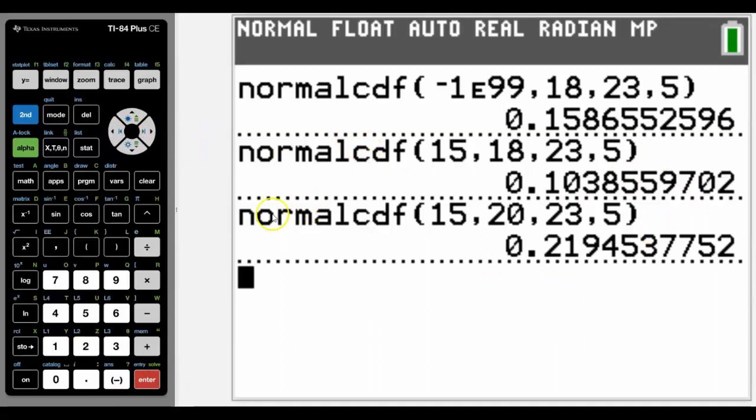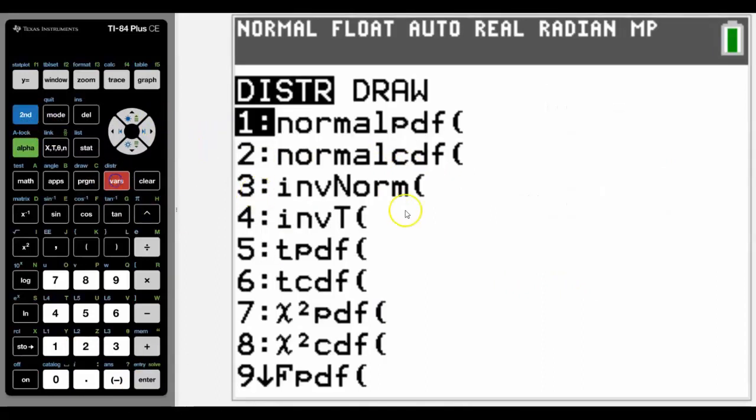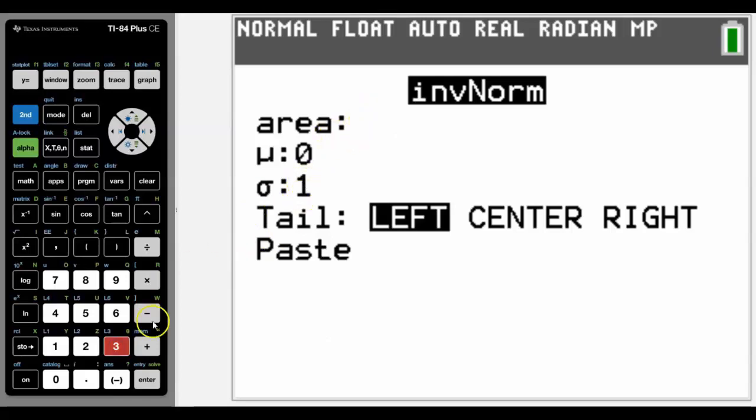Don't forget that inverse norm is going from the percentage back to find the value that it will give us that for that probability. So if we go for inverse norm, let's say we want an area, bottom five percent.